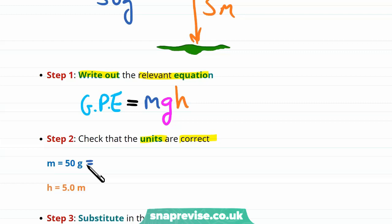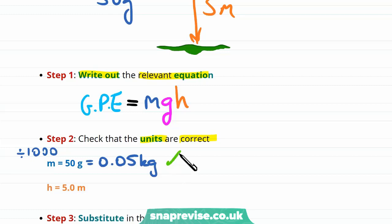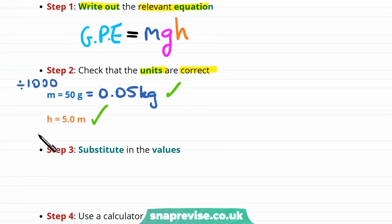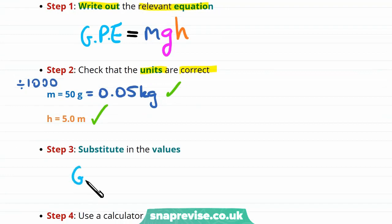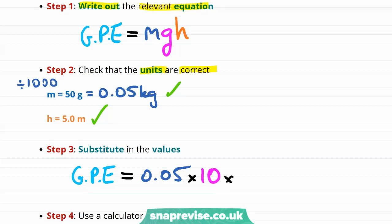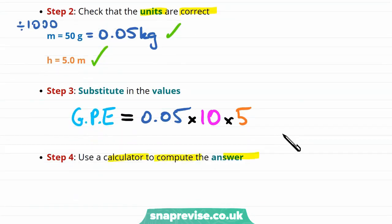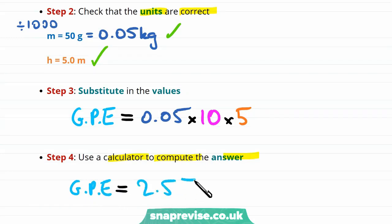We have an issue with the mass — it's given in grams, but we need kilograms. To convert, we divide by 1000, giving us 0.05 kilograms. The height is already in meters. Substituting the values into the equation and using a calculator, we find that the gravitational potential energy is equal to 2.5 joules.